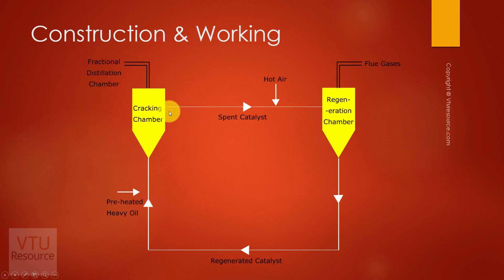The finely divided catalyst, i.e., alumina and silica, is kept in the cracking chamber and temperature is maintained around 500 plus degree Celsius. The preheated heavy oil,